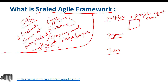At the portfolio level, they get the business epics. An epic is a collection of user stories. The portfolio management group collects the business epics — this is their responsibility. They gather all the requirements from the customer and create the business epics.